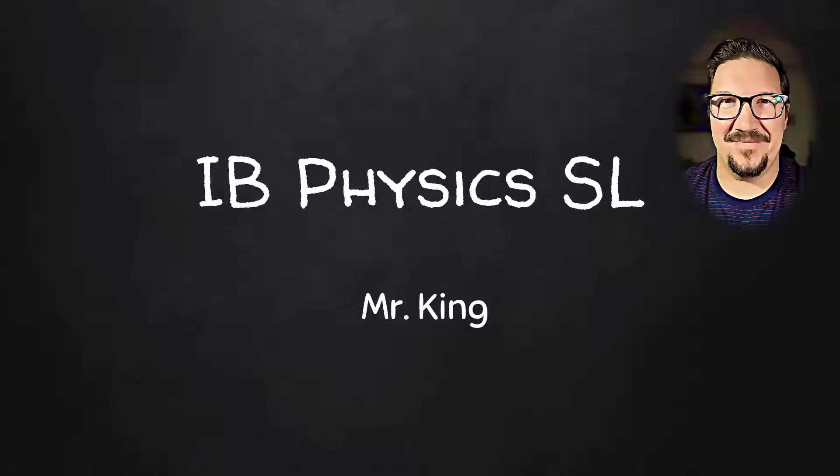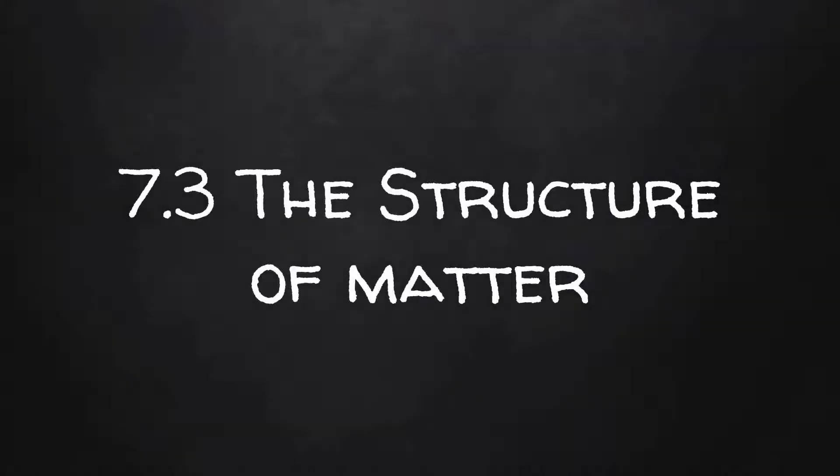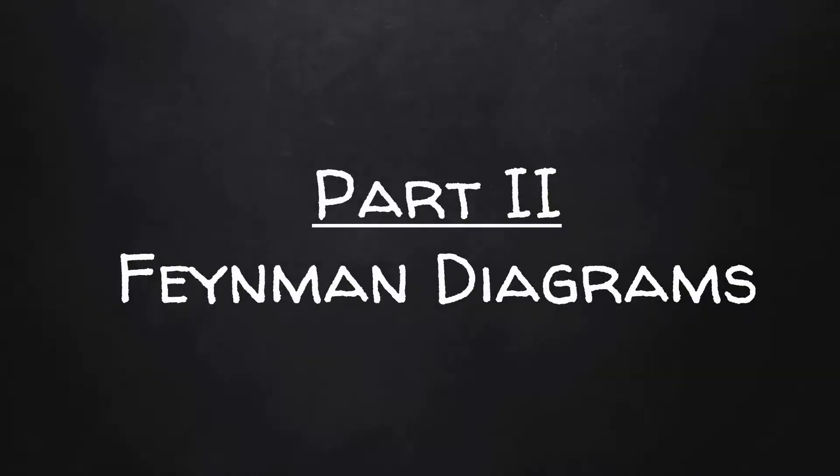This is IB Physics SL. I am Mr. King. Topic 7: Atomic, Nuclear, and Particle Physics, Section 7.3, The Structure of Matter Part 2: Feynman Diagrams.